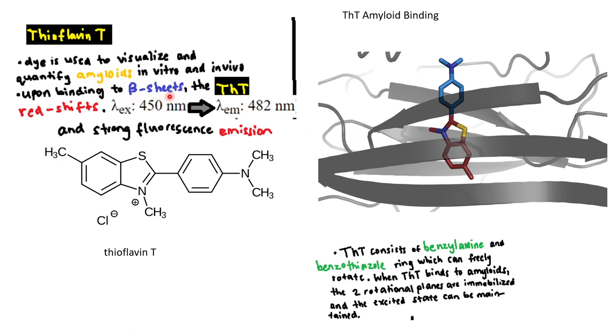The thioflavin T molecule basically red shifts. So normally under normal conditions the emission spectra is roughly 420 nanometers, but then in the presence of beta sheets from amyloids the emission spectra becomes 482 nanometers.